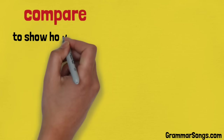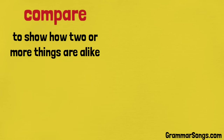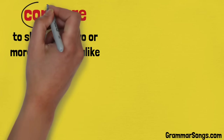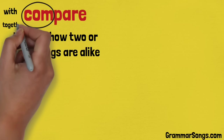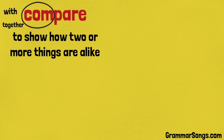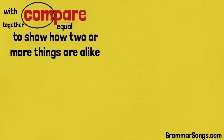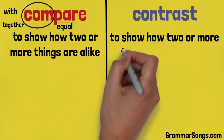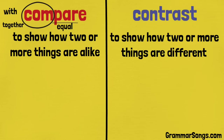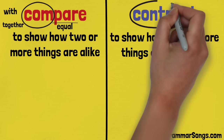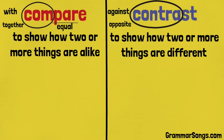Compare means to show how two or more things are alike. Com is a Latin prefix meaning 'with' or 'together,' and par is a Latin root meaning 'equal.' So when you compare things, you show how they are equal with one another. Contrast means to show how two or more things are different. Contra is a Latin prefix meaning 'against' or 'opposite.' So when you contrast things, you tell how they are opposite or unalike.